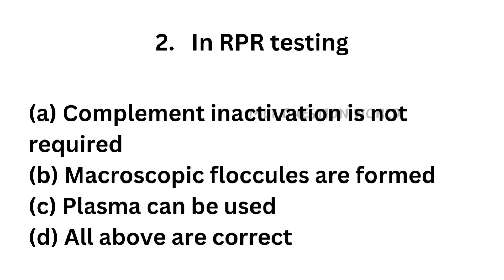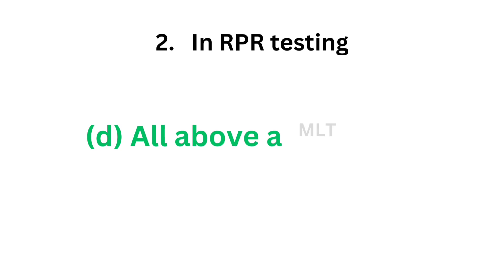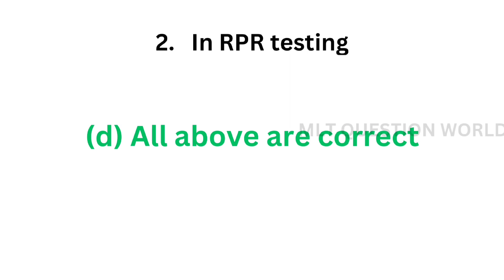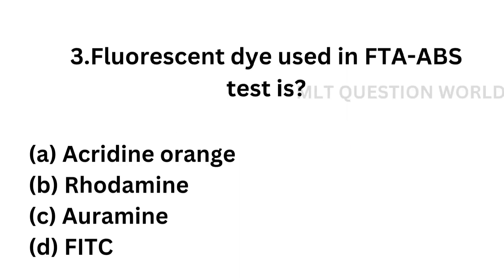Question number 2. In RPR testing: Option A, complement inactivation is not required; Option B, macroscopic floccules are formed; Option C, plasma can be used; Option D, all the above are correct. Which of the following statements is true regarding RPR testing? The correct answer is Option D, all the above are correct. Complement inactivation is not required, macroscopic floccules are formed, and plasma can be used.